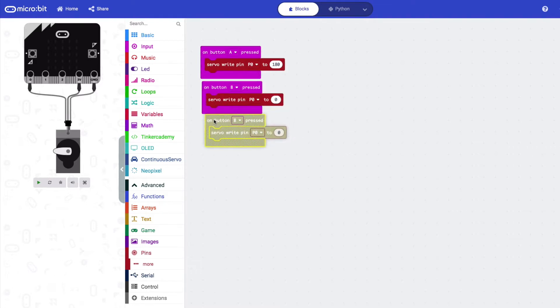Duplicate the function one last time and set the value to 90. We'll now try this out in the simulator.